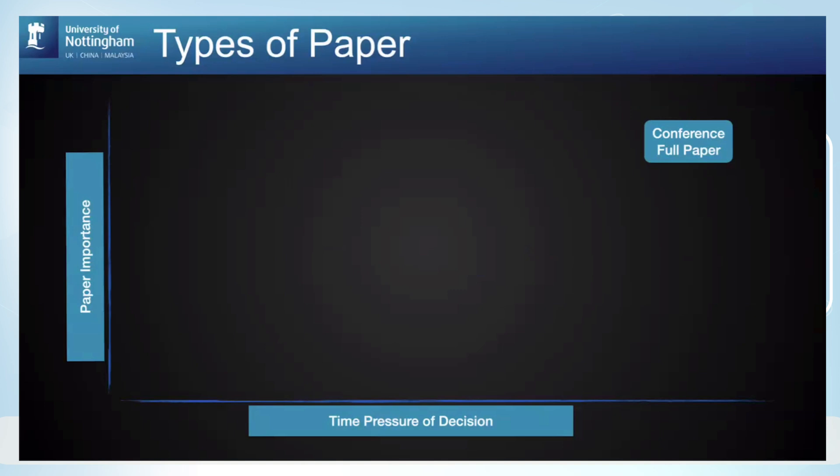On one axis I've got the importance — how big, critical, and good is this paper — and on the horizontal axis the time pressure involved in deciding how and where it will be published. A full conference paper is very important — one of the best things many of us will produce in HCI — with high time pressure and a conference deadline, decided once as accepted or rejected. Journal articles are also excellent publications, but don't have the same sense of time pressure; they're more focused on getting quality out there without an immediate deadline.